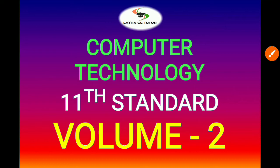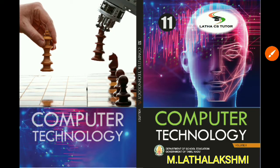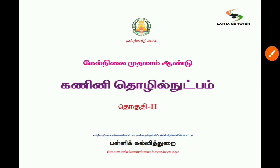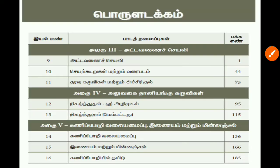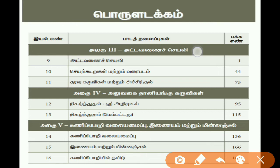Hi viewers, this is about the 11th Standard Computer Technology Group Volume 2 ebook and its table of contents. On loading the front page, you can see the cover page design. The table of contents shows three units — one for computer science and three units for computer application.